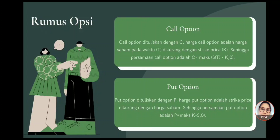Berikut adalah rumus dari opsi. Call option dituliskan dengan C. Harga call option pada saat T (waktu) dikurangi dengan strike price-nya, dilambangkan dengan K, sehingga persamaan call option-nya: C = max(ST - K, 0). Dari persamaan call option tersebut diketahui bahwa call option ini bernilai nol apabila harga sahamnya lebih rendah dibanding dengan strike price-nya. Apabila harga saham lebih tinggi dibanding dengan strike price-nya, maka nilai call option adalah selisih dari harga saham dengan strike price-nya.